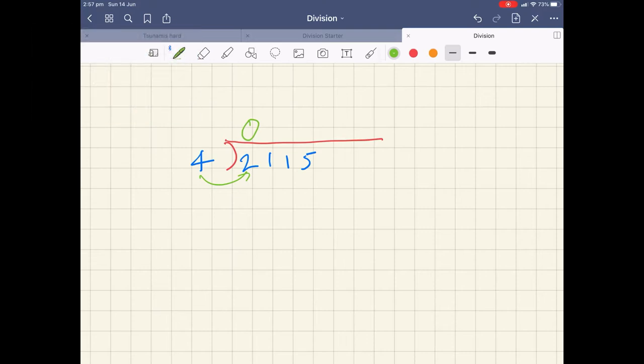So 4 into 2 won't go, so then it becomes 4 into 21, and because you're doing the short division, you've got good strong tables knowledge. You know that that's 5, and 4 fives are 20, but the number is 21, so there's 1 left over all done in my head.